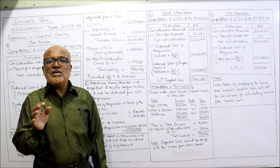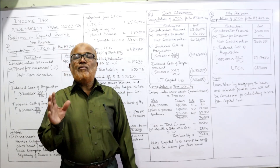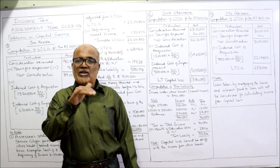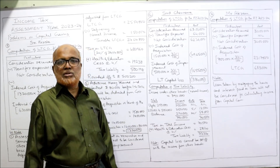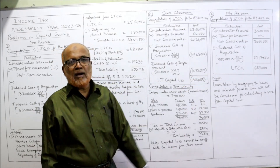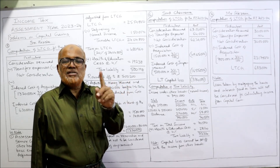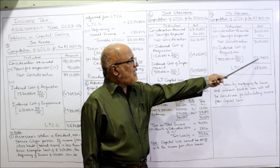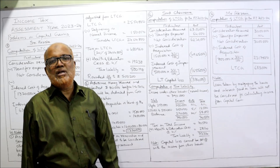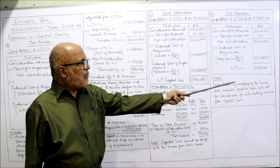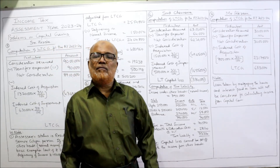Indexed cost of acquisition: he purchased gold before 1st April 2001 — in 1998. Whenever an asset is purchased before 1st April 2001, we take either the actual cost or FMV, whichever is higher. But fair market value is not given in this problem, so we take the actual cost of Rs. 7 lakh. Into 331 divided by 100 — index of purchase year taken as 100 — = Rs. 23,17,000. Rs. 30 lakh minus Rs. 23,17,000 = Rs. 6,83,000 long-term capital gain. Loan taken by mortgaging and interest paid on loan will not be considered for calculating income from capital gain — write this point in examination.